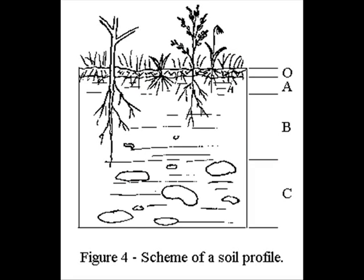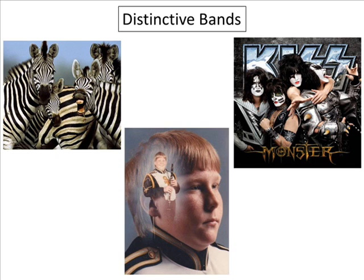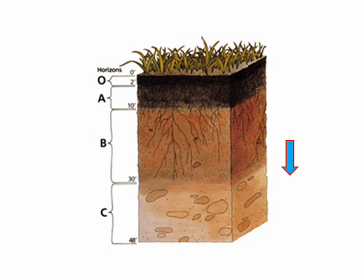Many plant roots find their home in the B horizon, which is composed of the various substances that we just talked about. As these various substances are deposited in the B horizon from the A horizon, they may form distinctive banding patterns. As you go deeper in the B horizon, we reach, you guessed it, the C horizon.